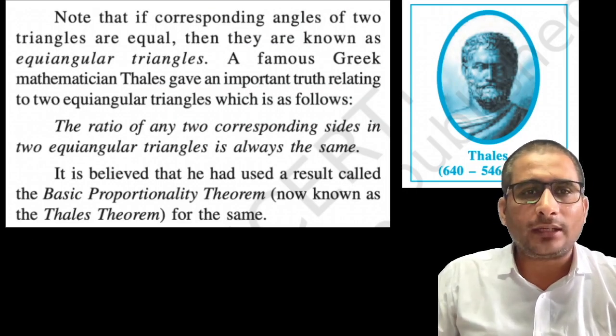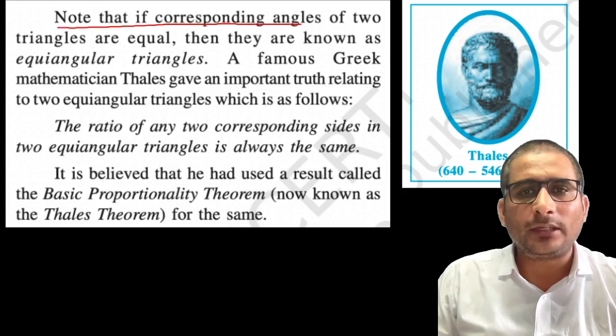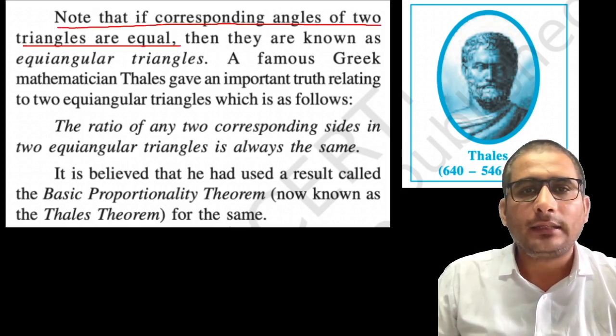Now, if you look at what is written on the screen, note that if the corresponding angles of two triangles are equal, then they are known as equiangular triangles.